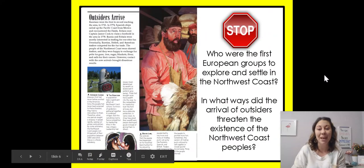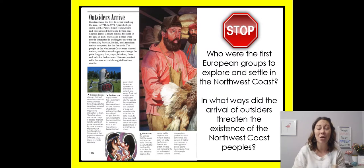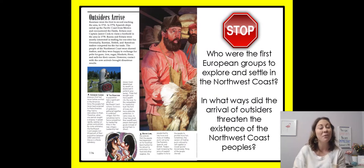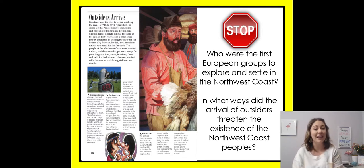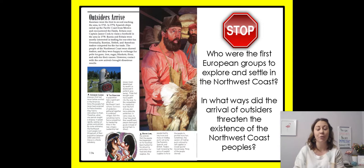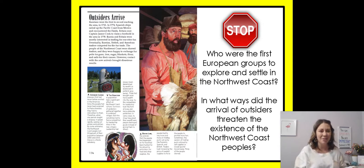On this page we have a couple of stop-and-think questions. As I'm reading, I want you to think about the answers. The first one is: who were the first European groups to explore and settle in the Northwest Coast? The second one is: in what ways did the arrival of outsiders threaten the existence of the Northwest Coast peoples? Keep those in mind as I read.